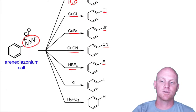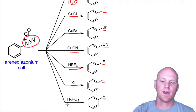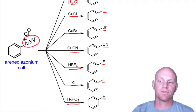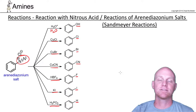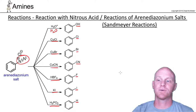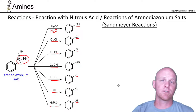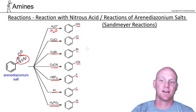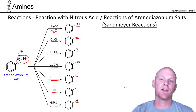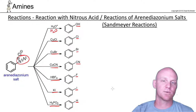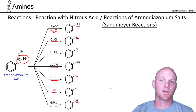You can also replace the diazonium with a fluorine using HBF4, an iodine with potassium iodide, and finally a hydrogen with H3PO2, hypophosphorous acid. This is something you simply need to commit to memory — all these different options. Make some flashcards and do what you need to do, but you do need to commit these Sandmeyer reactions to memory if this is part of your course curriculum.